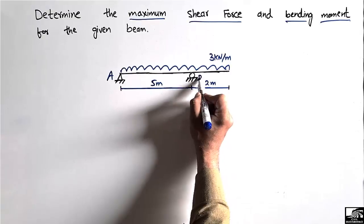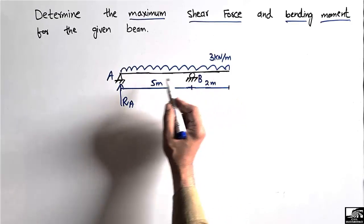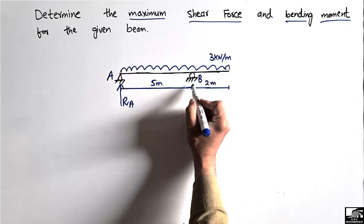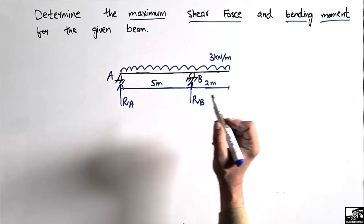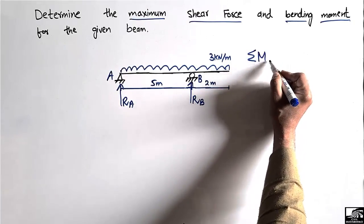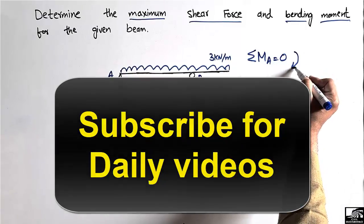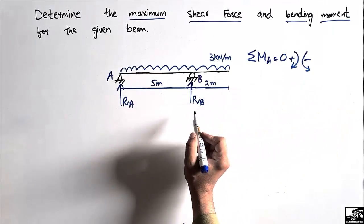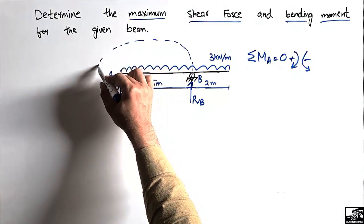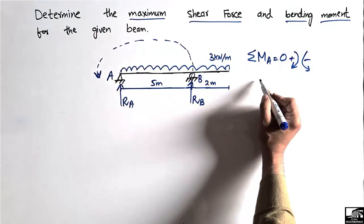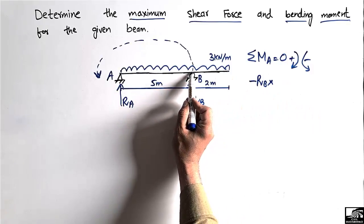Let's call the supports A and B. Support A is a hinge support, which can take vertical and horizontal loads. Since there is no horizontal action on this beam, we don't need to consider horizontal reaction. We need to find RA and RB. Using the equilibrium equation — summation of moments at any point equals zero — clockwise moment is taken as positive and anti-clockwise as negative. RB acts upward and creates an anti-clockwise moment about point A, so it is taken as negative: minus RB multiplied by the distance from B to A, which is 5 meters.